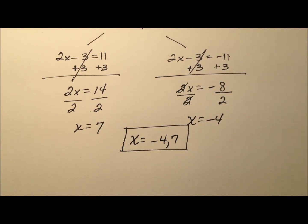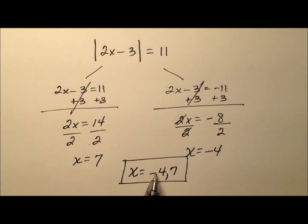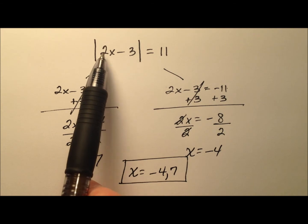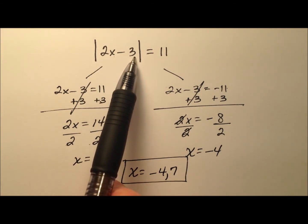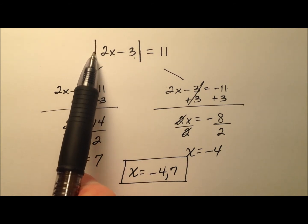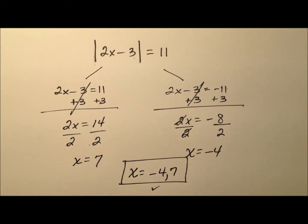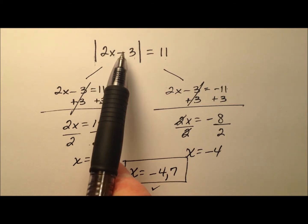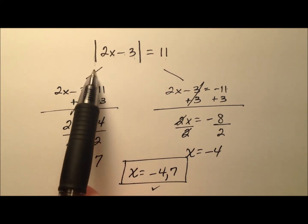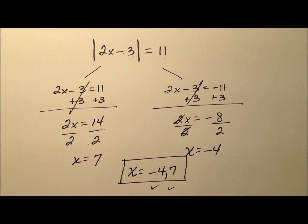Since it's an equation, I'd like to plug the solutions back in to make sure they work. Let's try negative 4 first: 2 times negative 4 is negative 8, minus 3 is negative 11. The absolute value of negative 11 is positive 11, so negative 4 works. Now with 7: 2 times 7 is 14, minus 3 is 11, and the absolute value of positive 11 is 11. So they both work out well.